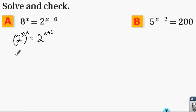Using rules of exponents, this becomes 2 to the 3x equals 2 to the x plus 6. Now, in an equation, if the bases are the same and the left side equals the right, that means the exponents are also equal.